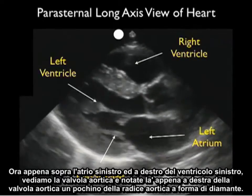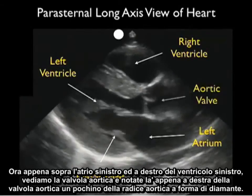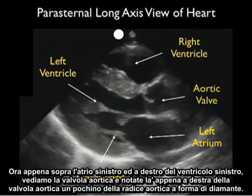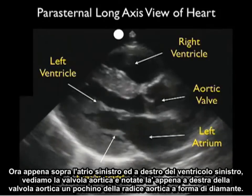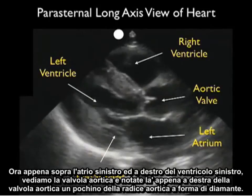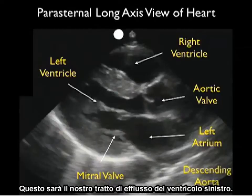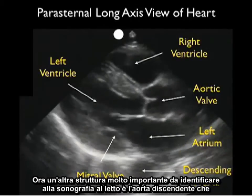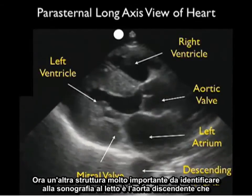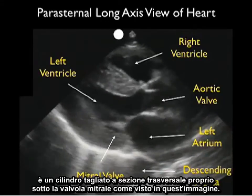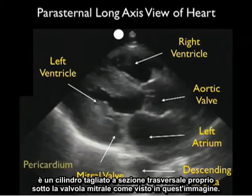Just above the left atrium and to the right of the left ventricle, we see the aortic valve, and just to the right of the aortic valve a little bit of the diamond-shaped aortic root — this is our left ventricular outflow tract. Another very important structure to identify on bedside sonography is the descending aorta, which appears as a cylinder cut in cross-section right below the mitral valve. This is a very important landmark because the posterior pericardial reflection — that white line seen posterior to the left ventricle — comes off anterior to the descending aorta, allowing us to distinguish whether fluid seen there may be pericardial or pleural.